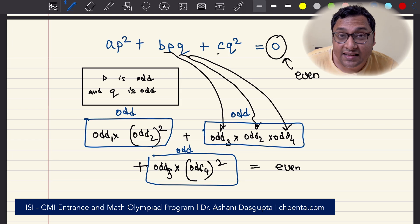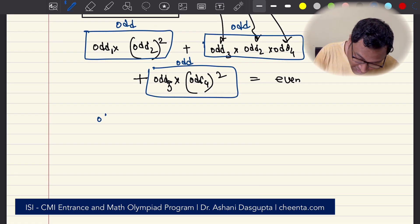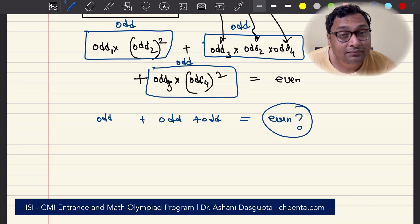Notice that then you are adding 3 odd numbers, right? Odd plus odd plus odd. If you add 3 odd numbers, can it be an even number?